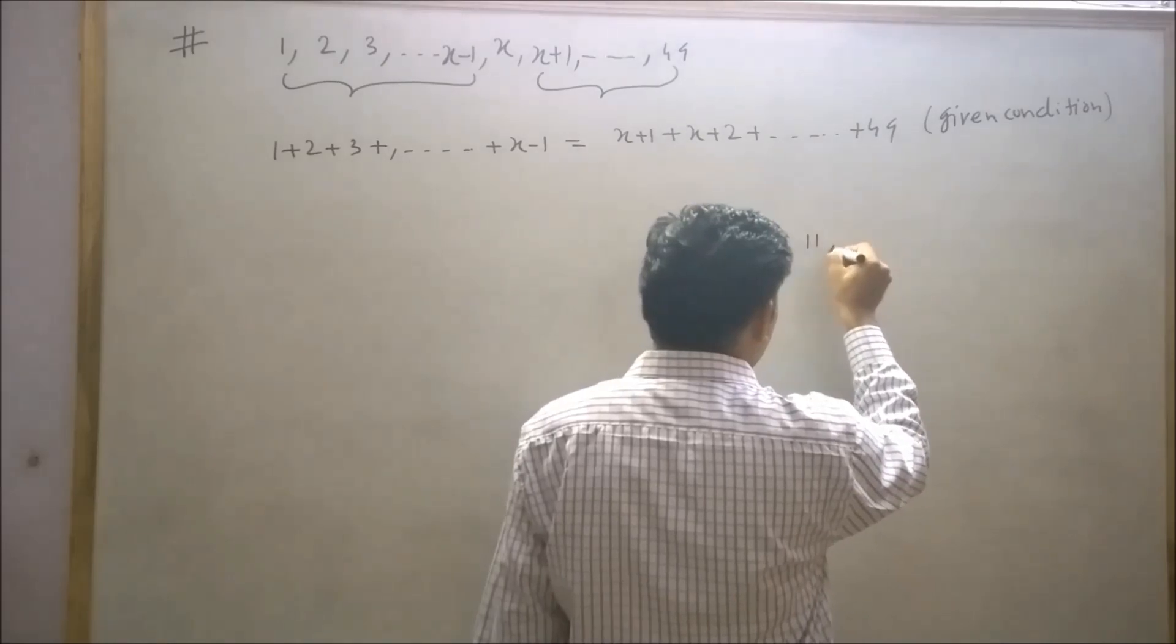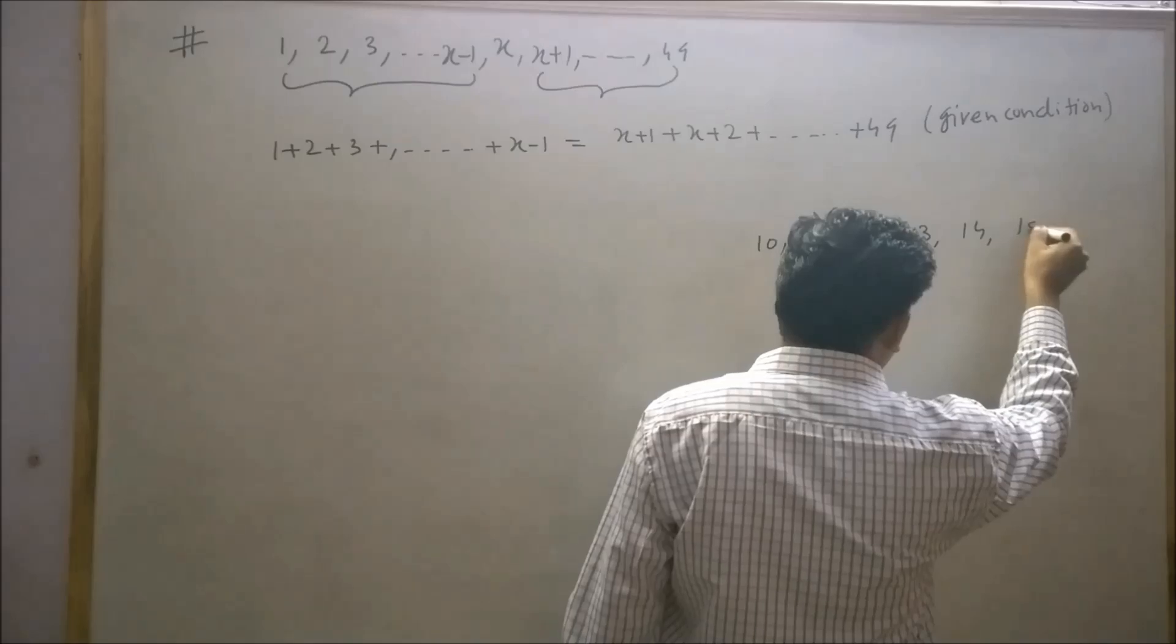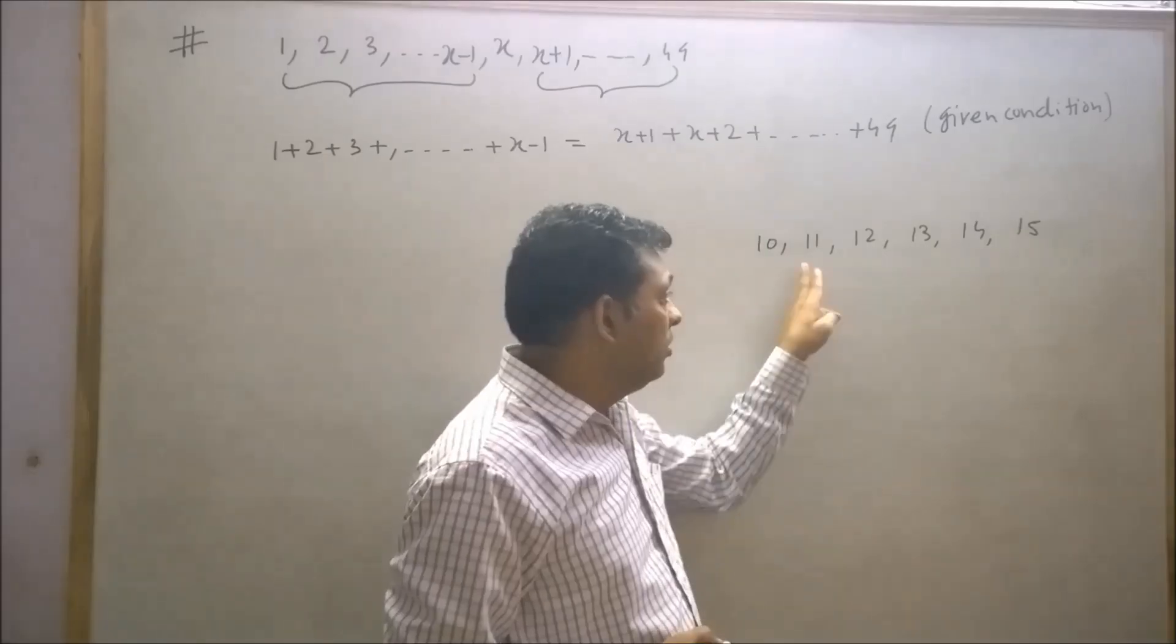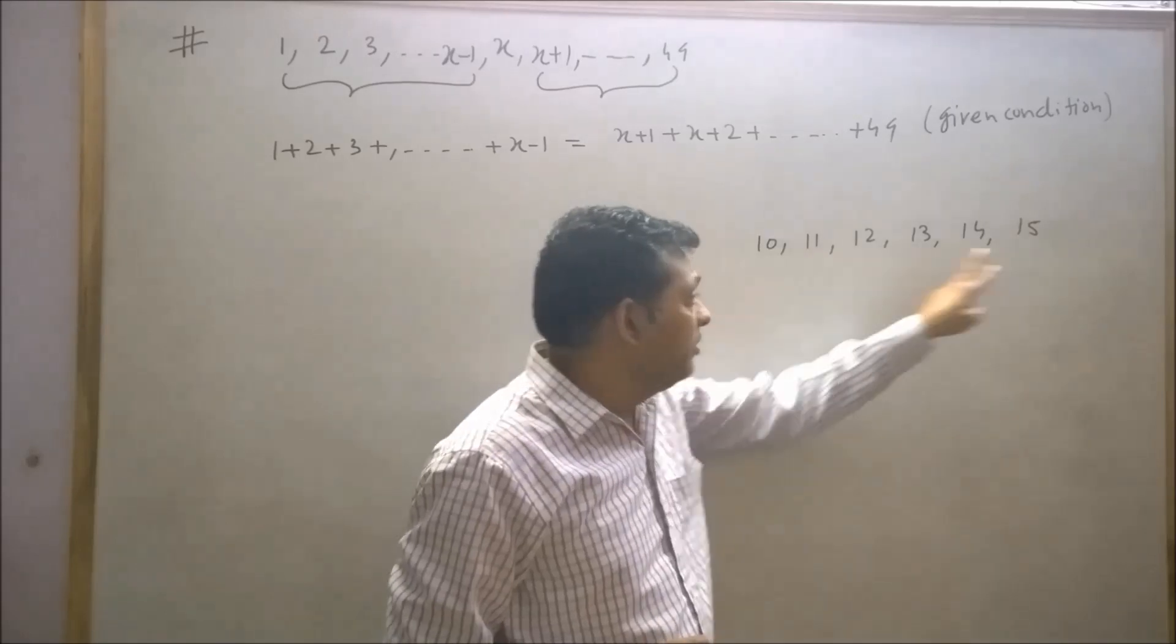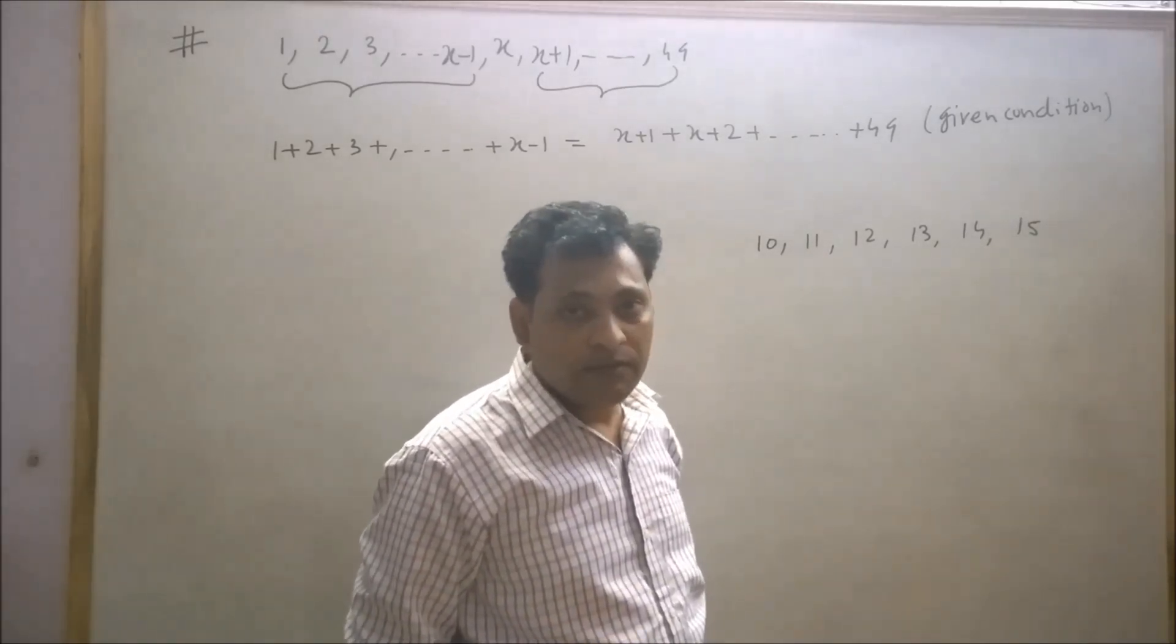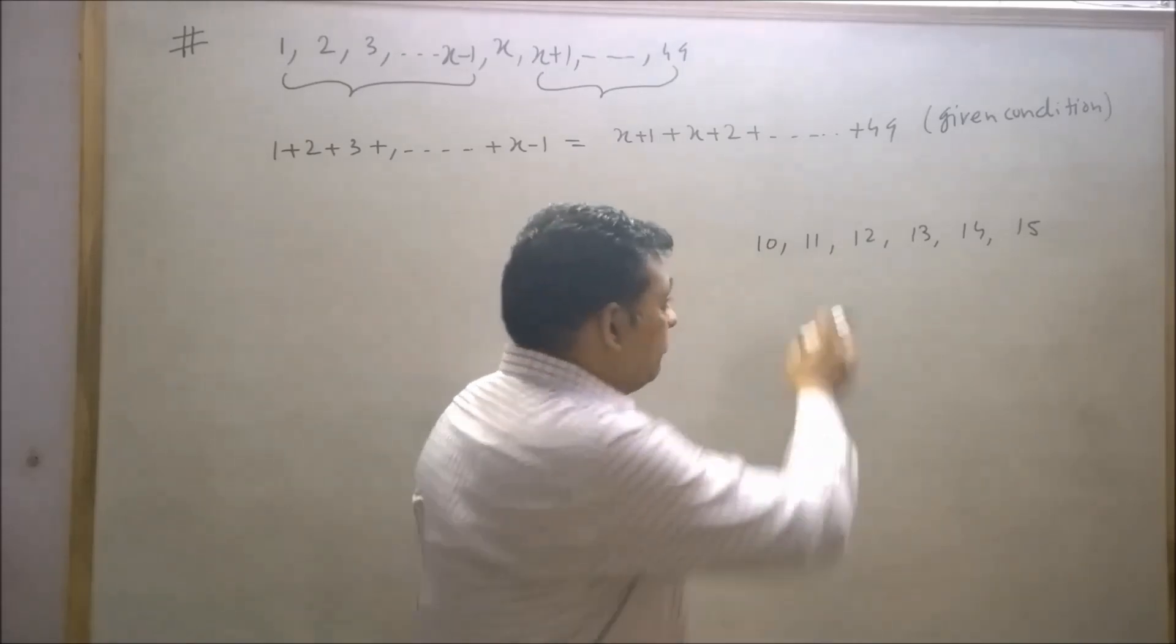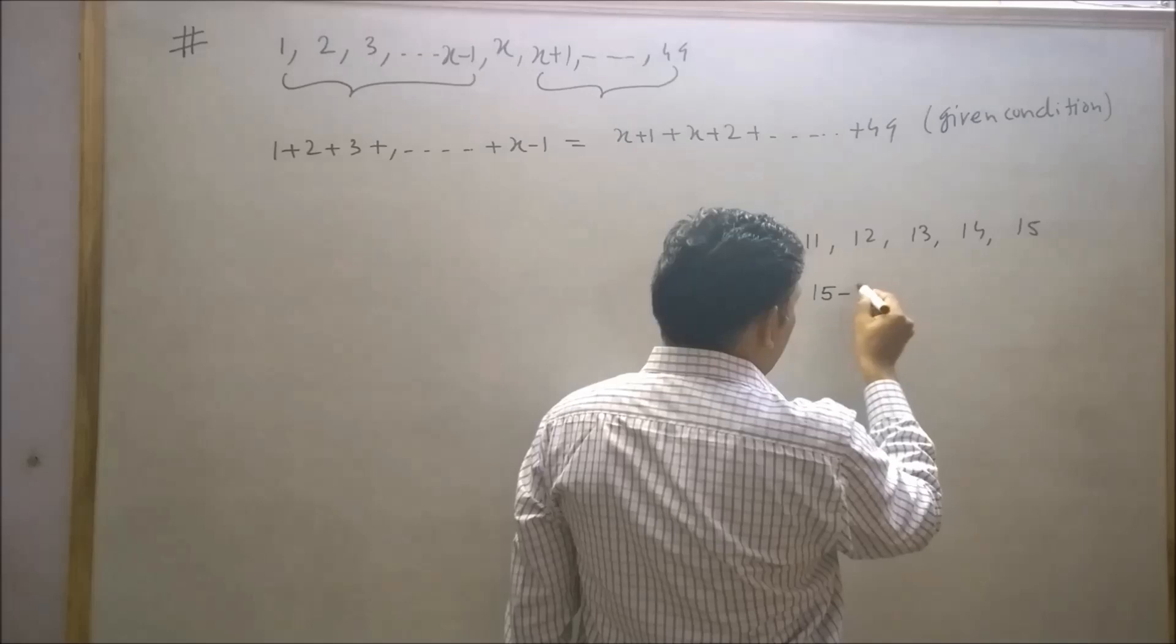Suppose if I write some natural numbers starting from 10 to 15: 10, 11, 12, 13, 14 and 15. Now I would like to ask a question. How many terms are there from 11 to 15? Your answer will be 15 minus 10, which means 5. That's 1, 2, 3, 4, and 5 terms.